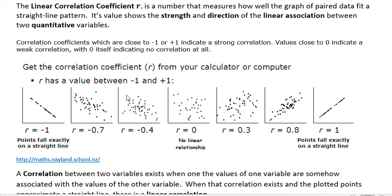We see less correlation until we get to zero, where there's really no linear relationship whatsoever. Then we start to see it form to the right as it becomes more positive, and finally R equals one where the points fall exactly on a straight line.